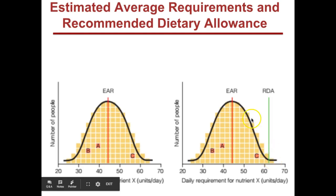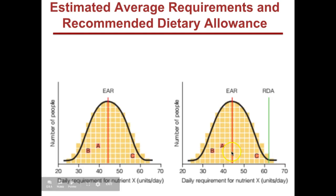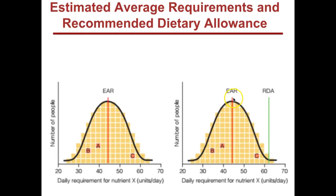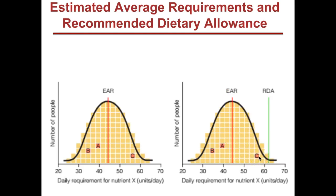The estimated average requirement is the average requirement of the population of people. In this case, persons A and B need less than the estimated average requirement, whereas person C needs more of Nutrient X than the estimated average requirement.